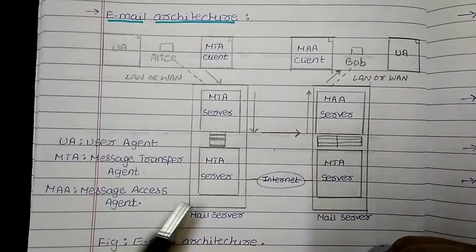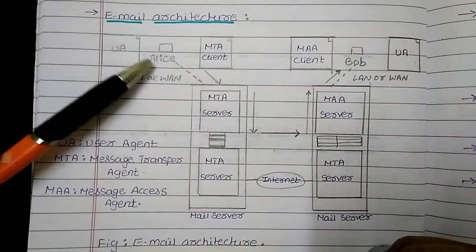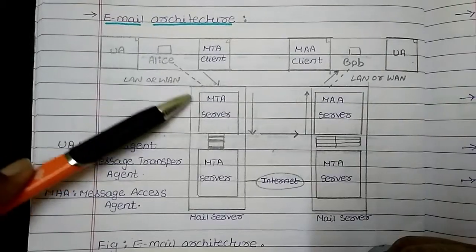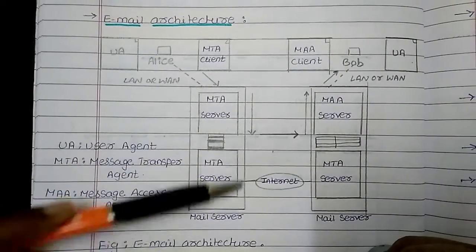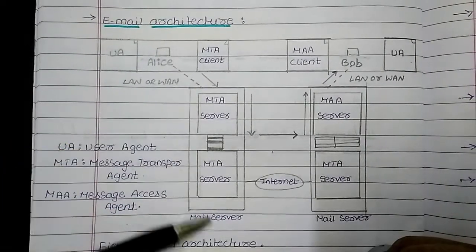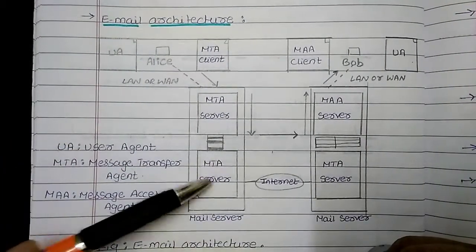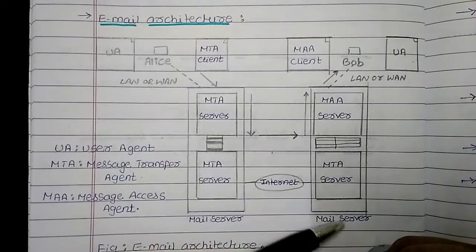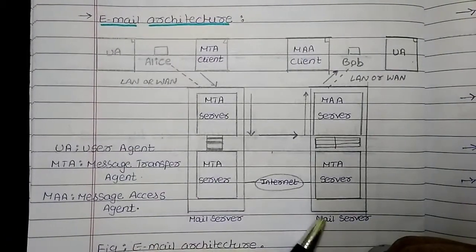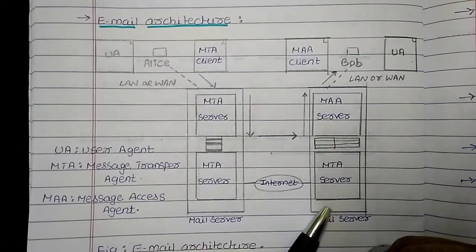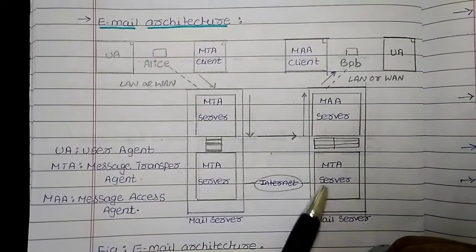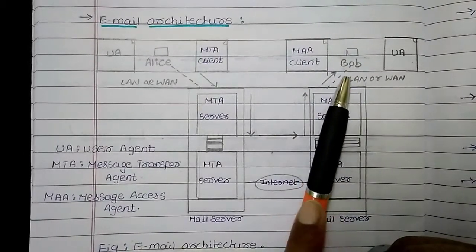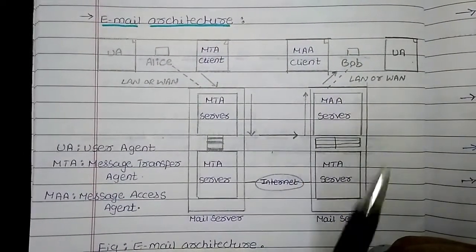In the working of email, Alice sends an email which goes to the system's mail server, and through that mail server over the internet it reaches the receiver's mail server, from which the receiver can accept the mails.